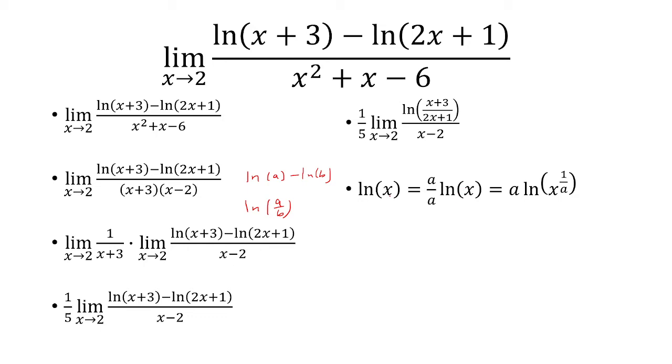And now I'm just using the fact that ln of x is the same thing as A times A over ln of x, since the A's cancel. And then this A, the denominator, is going to come up here as the exponent of x. And that's using this property, ln of x to the N is equal to N ln of x.